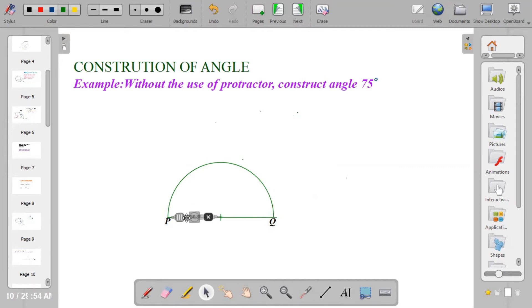So the first thing is to construct angle 60 degrees. Using the same radius as the radius of the semicircle, strike an arc on the semicircle to get 60 degrees.